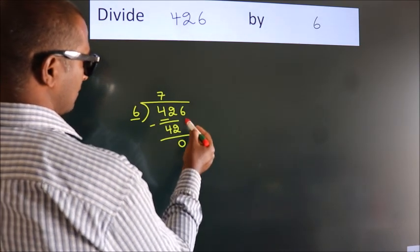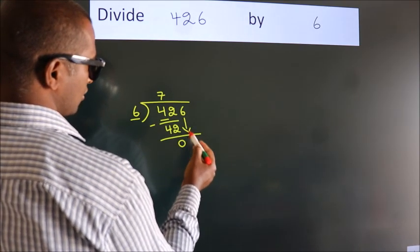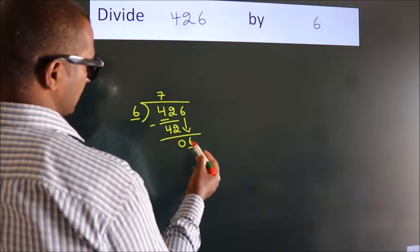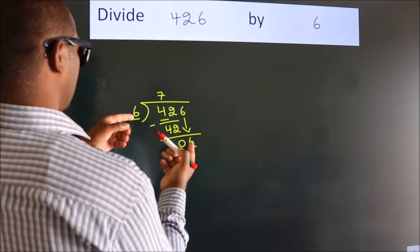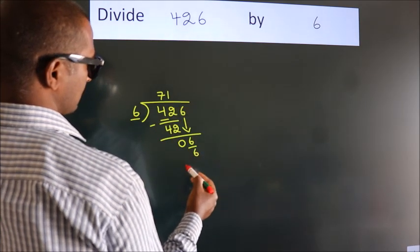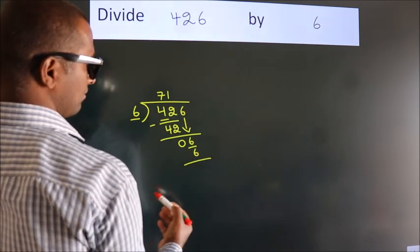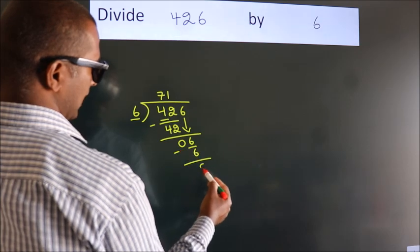After this, bring down the beside number, so 6 down, so 6. When do we get 6? In 6 table, 6 1s, 6. Now we subtract, we get 0.